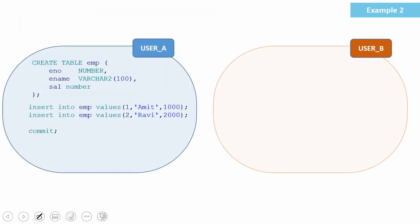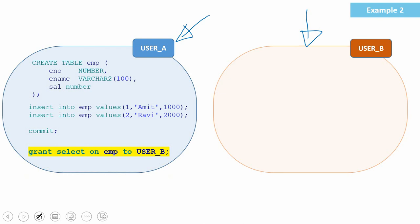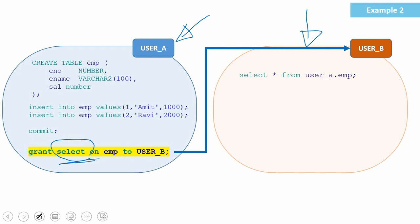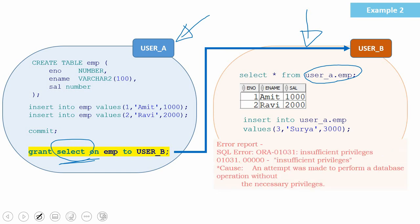Whenever you want to protect information or make data available as read-only to users, you create all those tables in a completely different schema and then give a SELECT privilege to that schema. For example, if all users are connected to User B, we can create all read-only tables in User A's schema, and then give only SELECT privilege on that table to User B — not insert, update, or delete. Once the SELECT privilege is granted, User B can access the table by specifying UserA.employee. But if User B tries to insert, update, or delete, they will get an error saying insufficient privileges. Let's see a small demo for this.